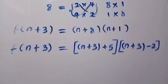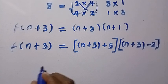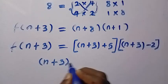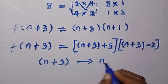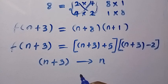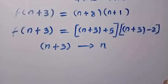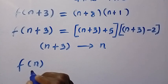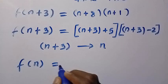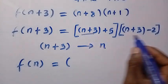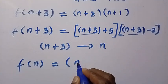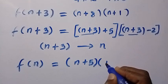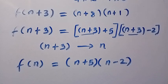After achieving this, the next step is to replace every single n plus 3 with n. Therefore our new domain for this function becomes f of n — replacing n plus 3 with n — giving us n plus 5 times n minus 2.